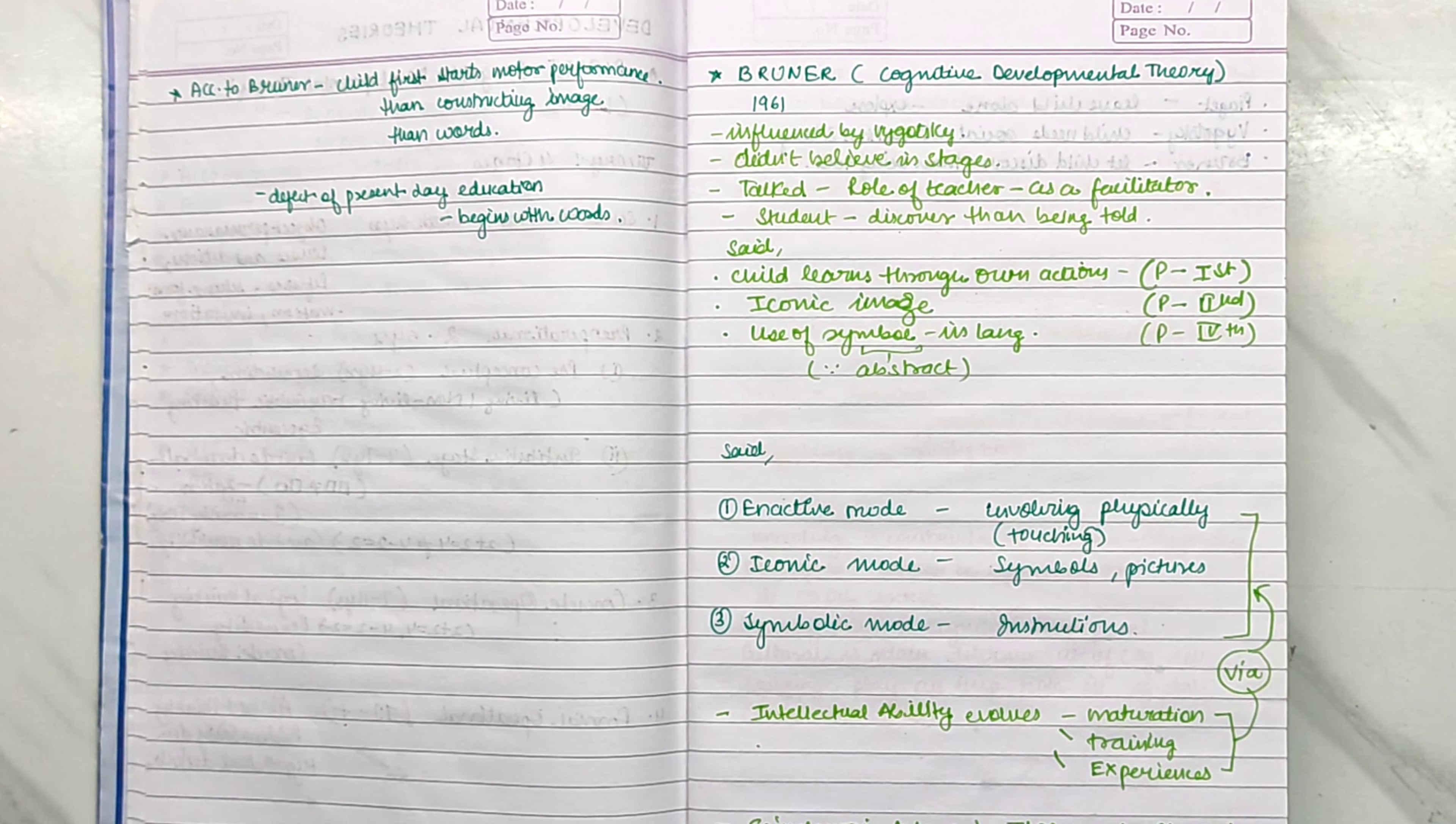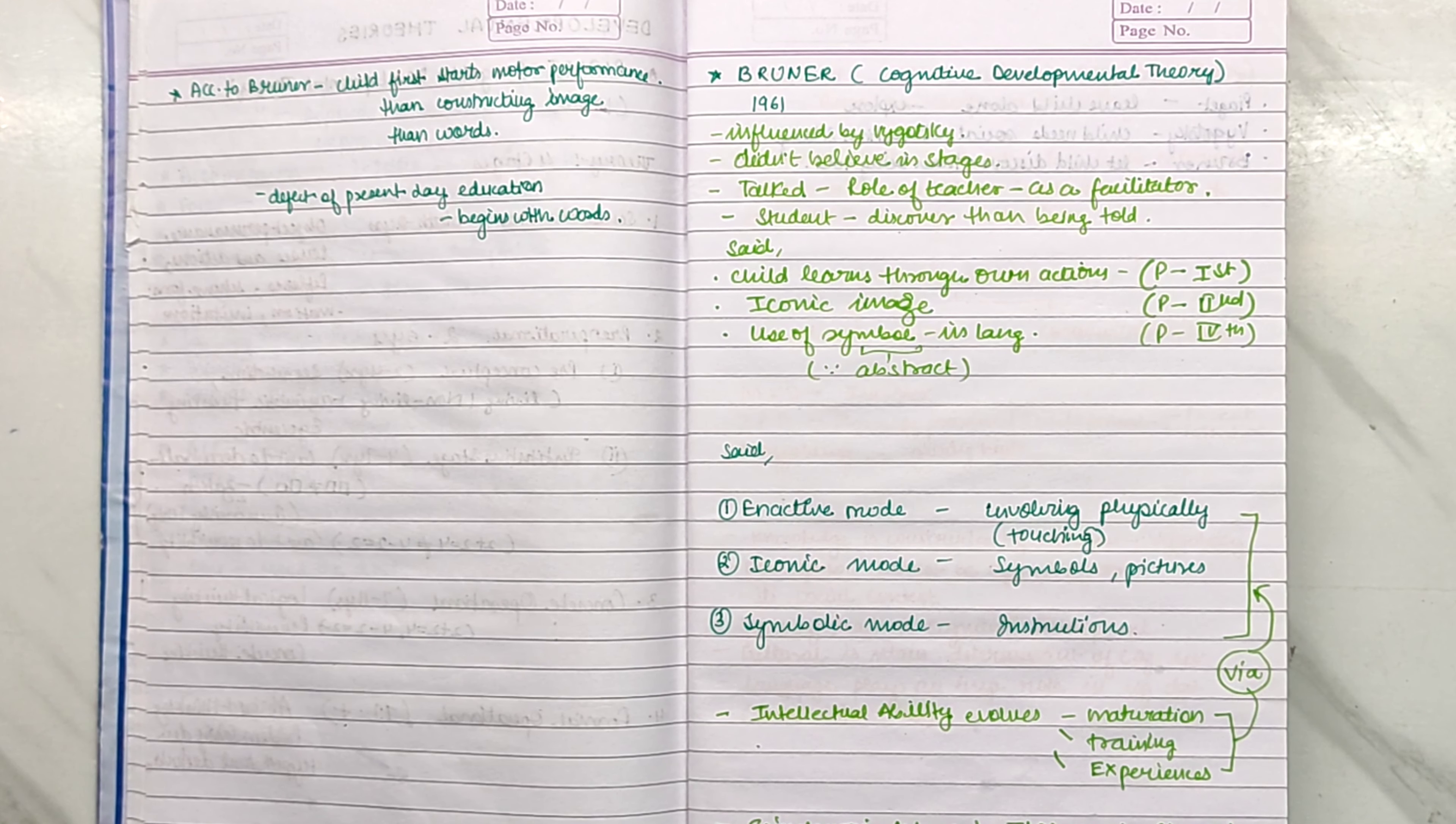Bruner talked about some of these theories. In their theory, there are three modes: inactive mode, iconic mode, and symbolic mode.